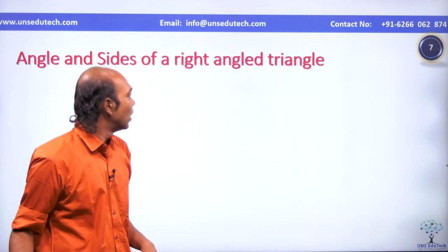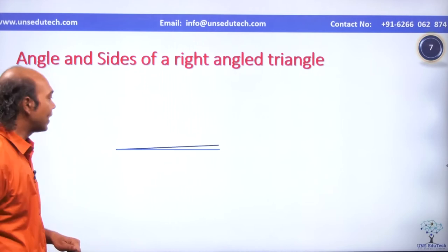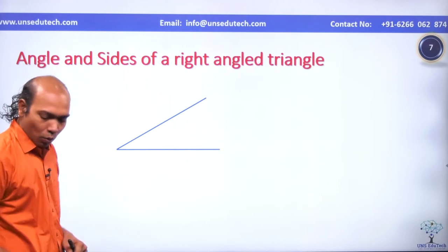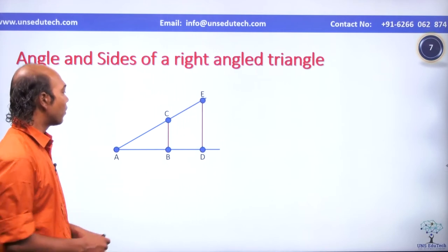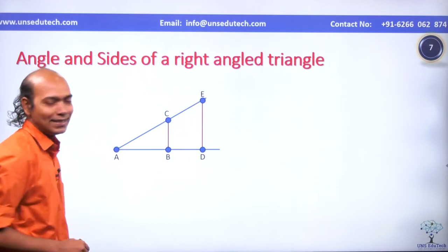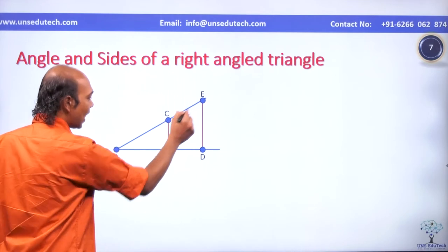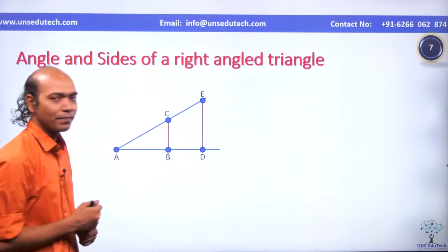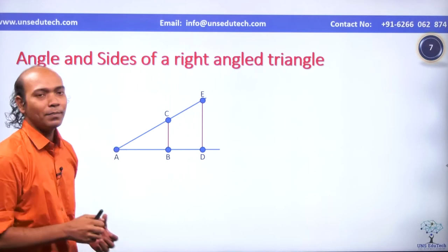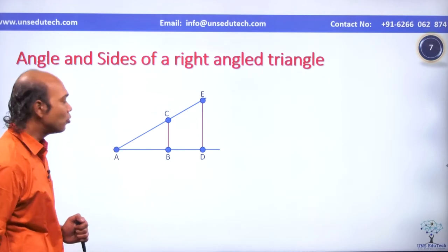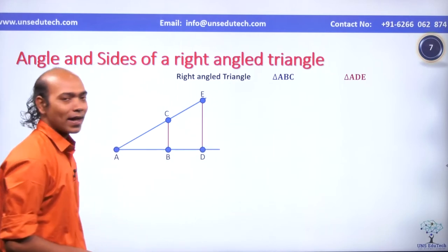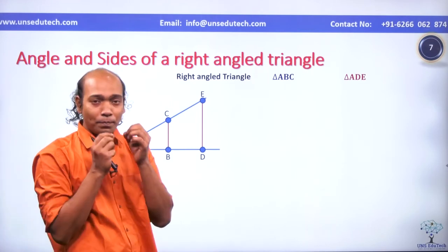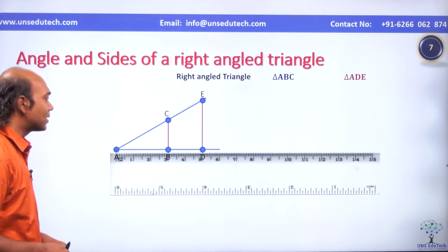We drop perpendiculars to get two right angle triangles — triangle ABC and triangle ADE. We try to measure their side lengths. Taking a ruler, we find AB is approximately 3 and AD is approximately 5. BC is approximately 1.7 and DE is approximately 2.85. Altitude and base are obtained. For hypotenuse, we calculate it as approximately 3.45 to 5.70. We note down all the side lengths one by one.